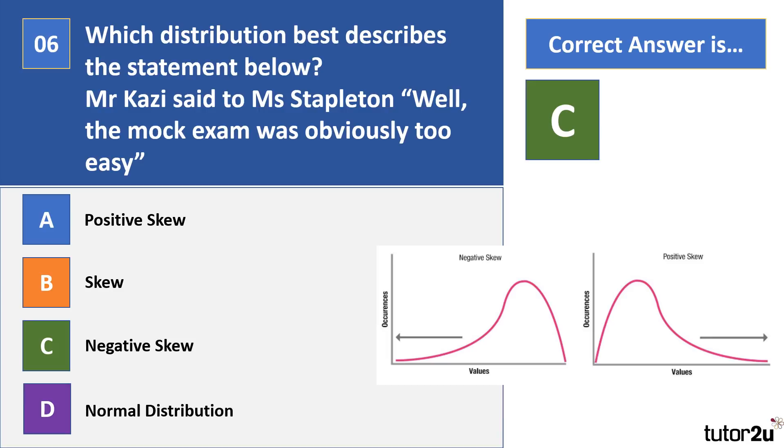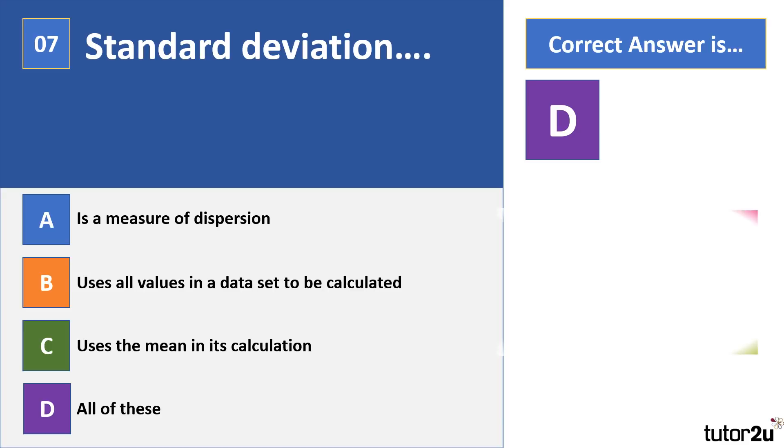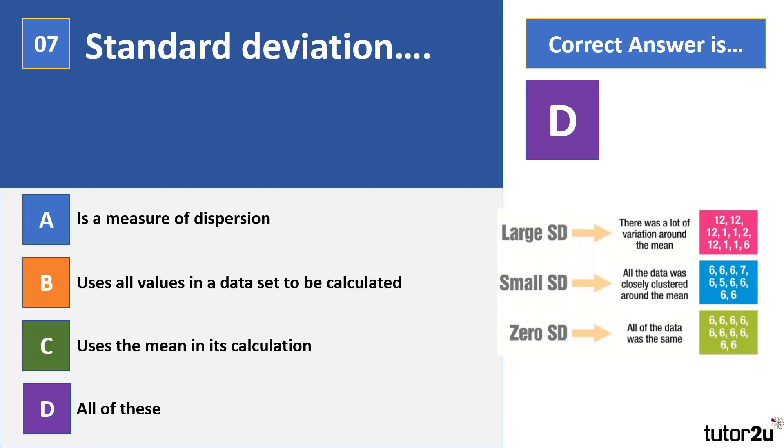All right, standard deviation. Which of these is it: A, B, C, or D? Pause your video. Right, your correct answer there is D.